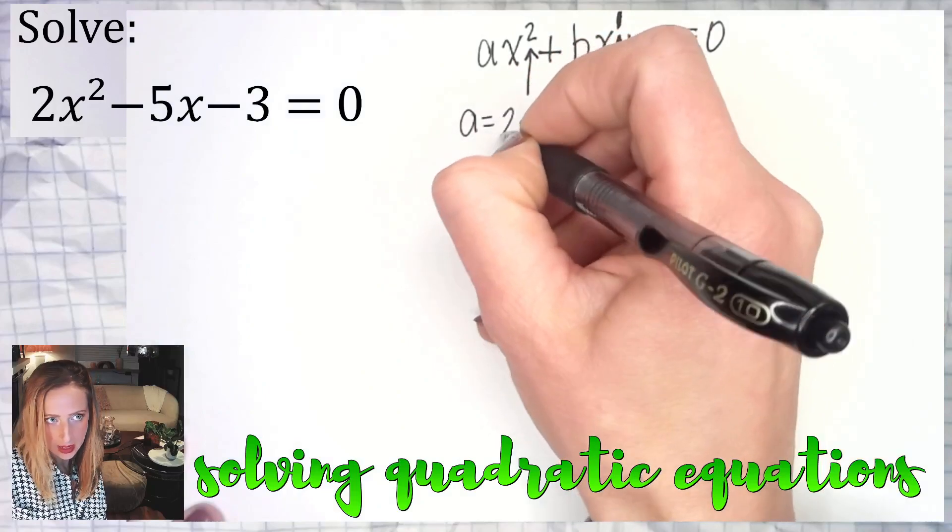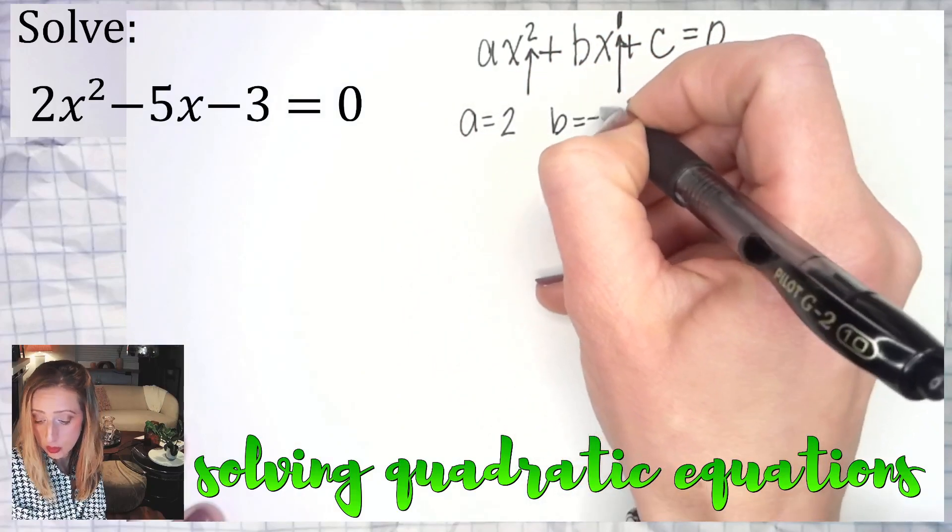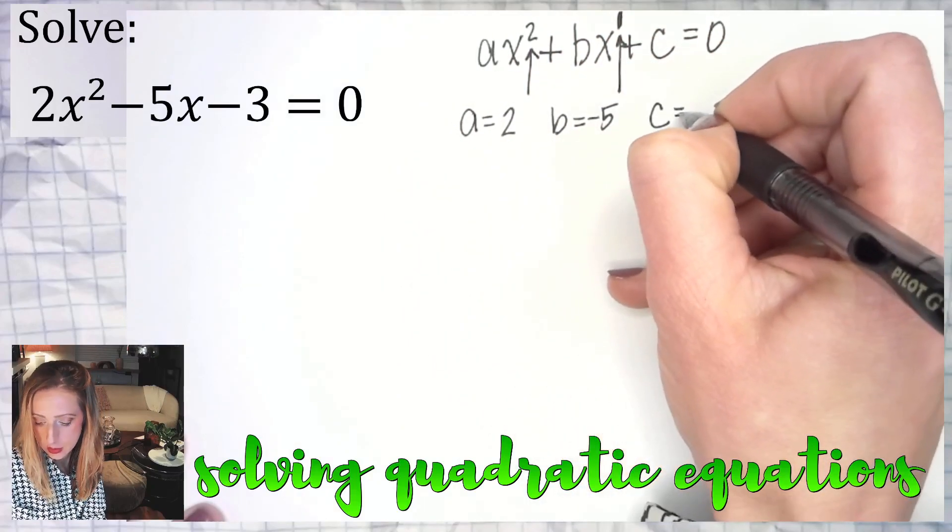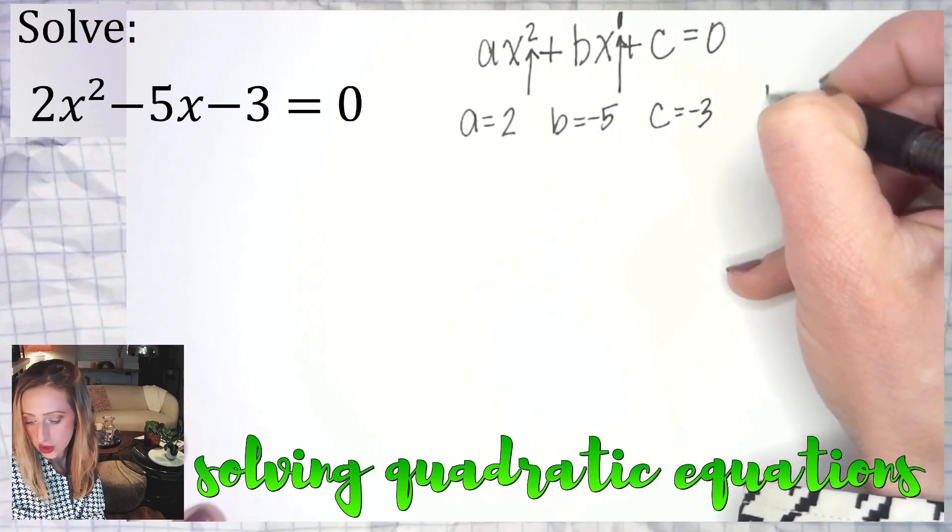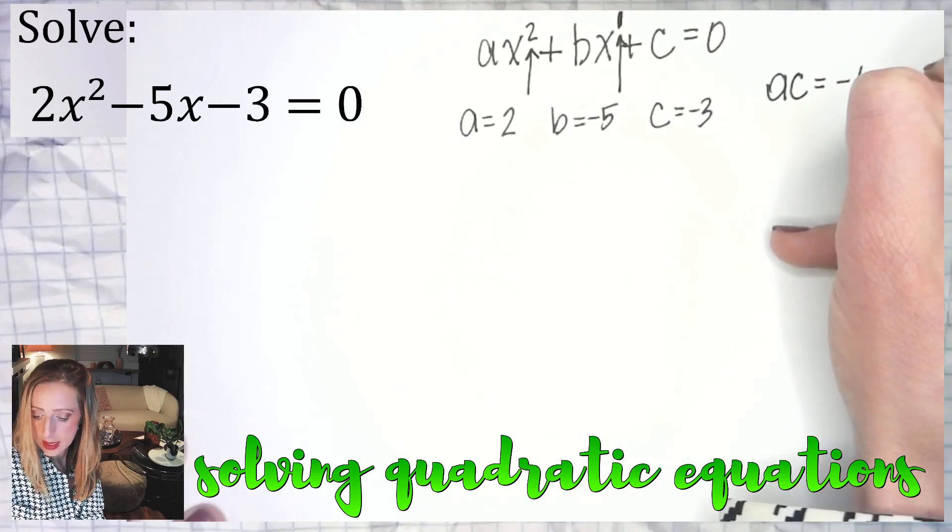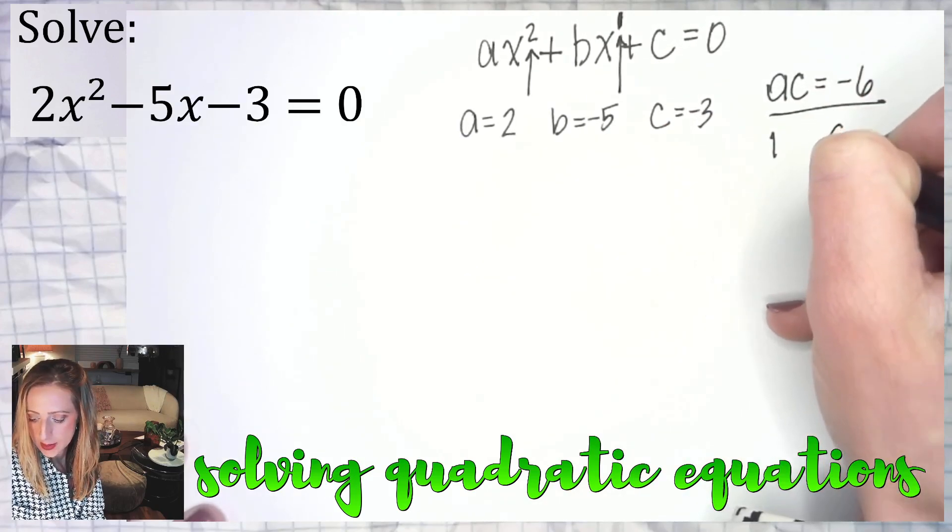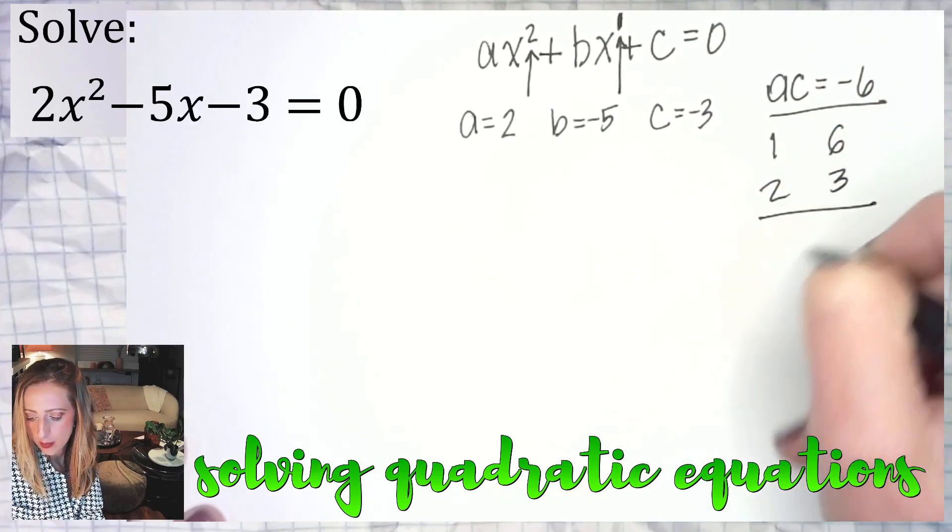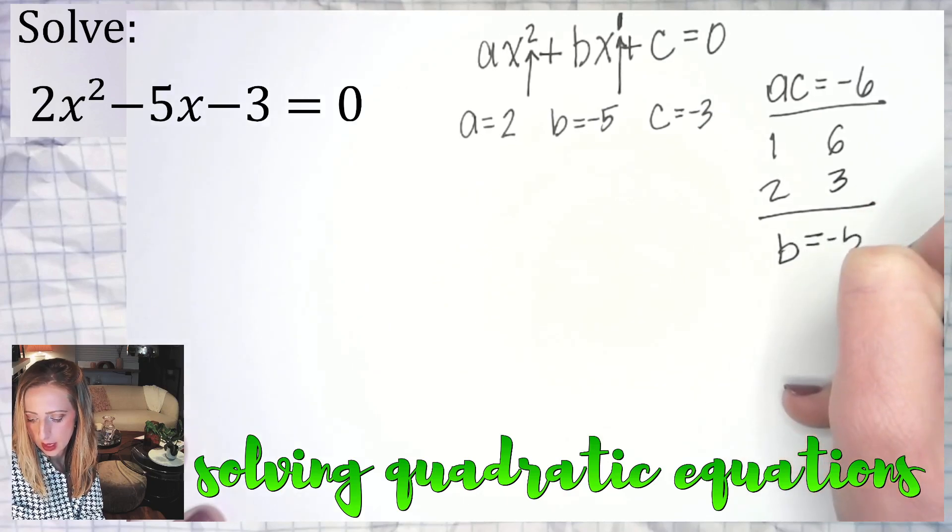In our example, the a equals two, the b is equal to negative five, and the c is equal to negative three. We're going to start off by multiplying a and c. Two times negative three is negative six. One and six, two and three, bottom of the list, b is negative five.